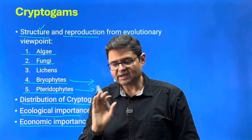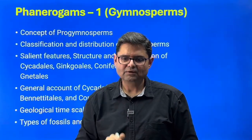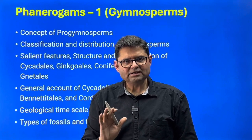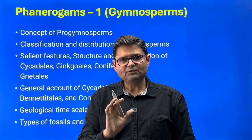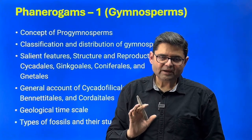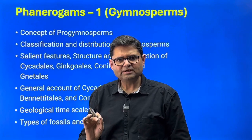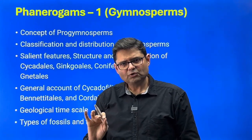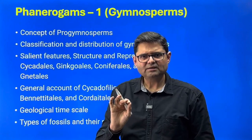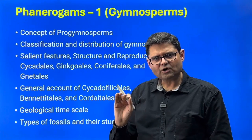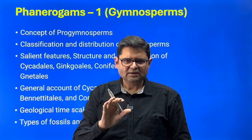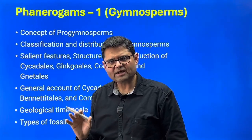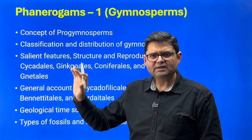Moving to Section B topics — phanerogams, the biggest part of the syllabus, divided into five parts: gymnosperms, angiosperm systematics, angiosperm families (20 families), angiosperm embryology, and angiosperm anatomy. For gymnosperms, browse through the last 20 years of questions and give top priority to those. There is very little likelihood that this range of questions will be bypassed by the examiner, and doing so effectively covers the entire gymnosperm syllabus.